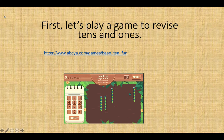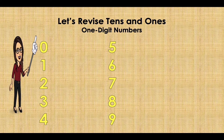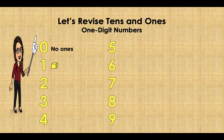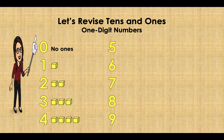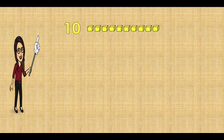Before we start with hundreds, we will first revise the basics: ones and tens. These are the one-digit numbers. For zero you will have no ones at all. For one you have one cube, for two you have two cubes, for three three cubes, and it goes on for four, five, six, seven, eight, nine.